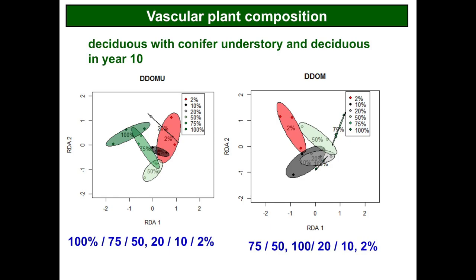In general, we see a response of community composition along the gradient of harvesting, with maybe a couple of breakpoints — some points at which there seems to be an important difference.